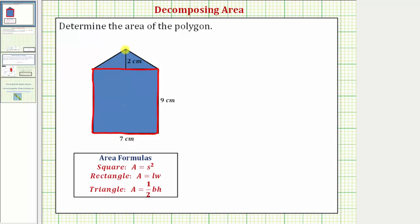And a triangle that has a base of seven centimeters and a height of two centimeters. Of course, the length of the base here is the same as the length of this side here of the rectangle.